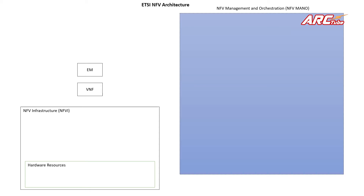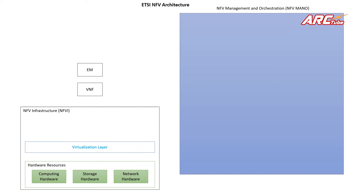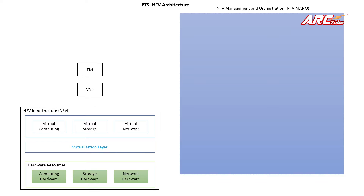Let's look at the NFVI first. We have hardware resources, which includes computing hardware, storage hardware, and also network hardware. This is the hardware resource component of the NFV — in fact, this is the foundation of the entire NFV architecture. On top of that, we have the virtualization layer, which is basically the hypervisor.